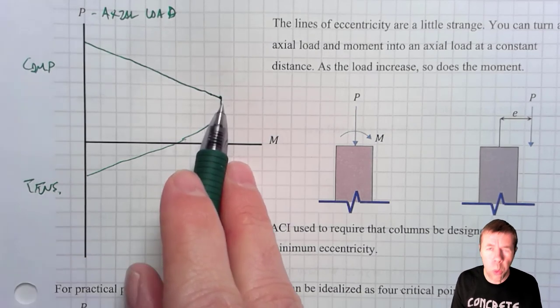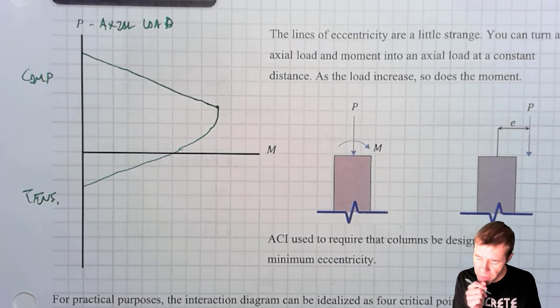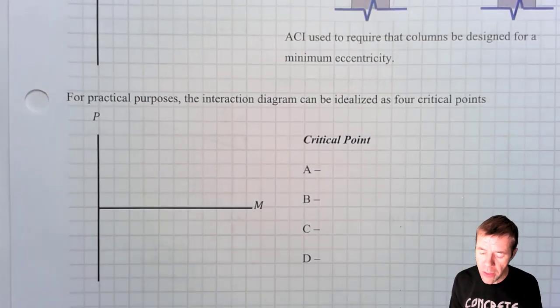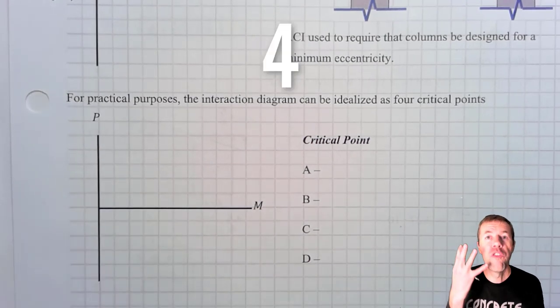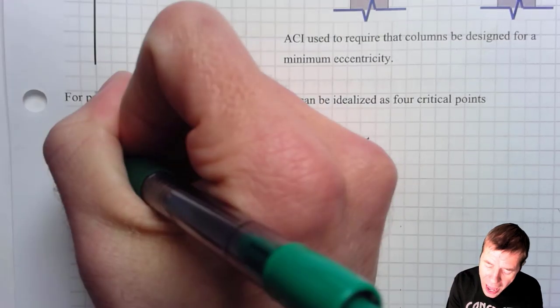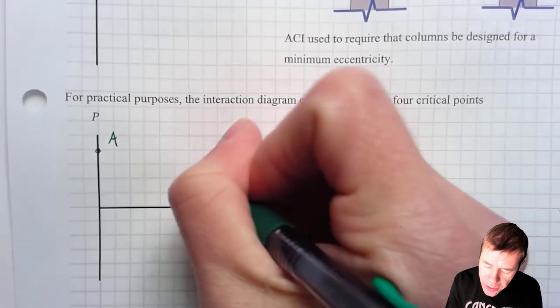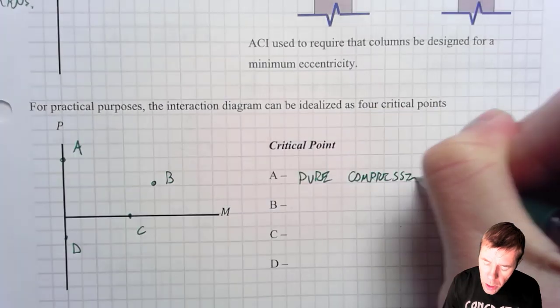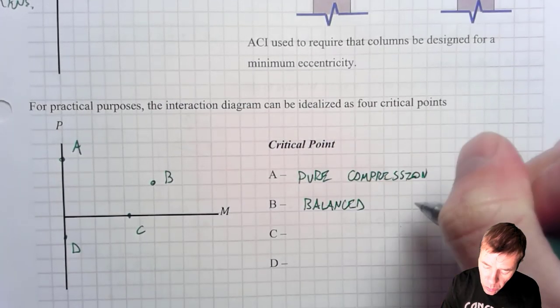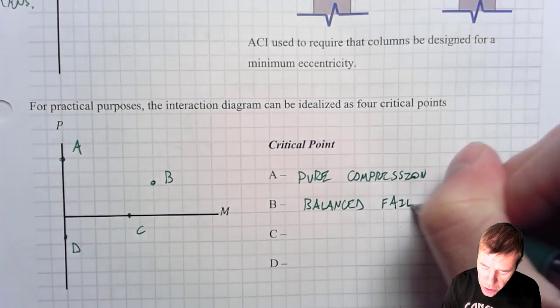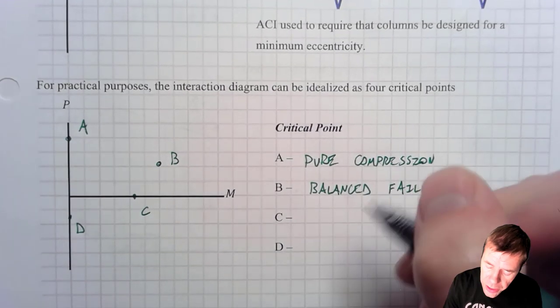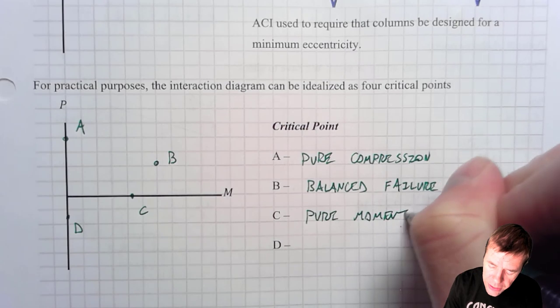Now, you might have said to yourself, what are these different parts? And how do I solve for this? How do I better understand this? Well, we're going to make this a little more simpler. We're going to, for practical purposes, simplify that parabola into four parts, four critical parts. Point A, point B, point C, and point D. Point A is pure compression. Point B is balanced failure. Oh, balanced failure. You should know what that is. Balanced? You've heard that before, right? With bending? That's like balanced reinforcement. I'll talk more about that coming up. Number C is pure moment. And D is pure tension.